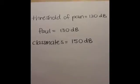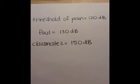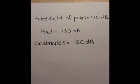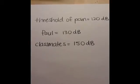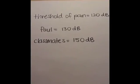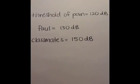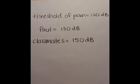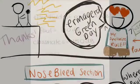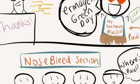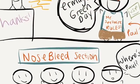The threshold of pain is 120 decibels. Since Paul's sound reached 130 decibels and the classmates reached 150 decibels, both of them surpassed the threshold of pain. That was a sound intensity level problem — thanks for watching!